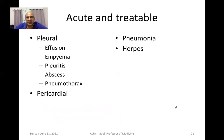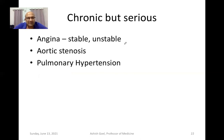There are acute and treatable causes which could be pleural-based — the patient may have effusion, empyema with pus in the pleural cavity, pleuritis with inflammation causing friction pain, a chest abscess, pneumothorax, or pericardial causes, pneumonia, and herpes zoster infection. Among chronic but serious conditions, the patient could have stable angina, aortic stenosis, or long-standing pulmonary hypertension — all serious situations.